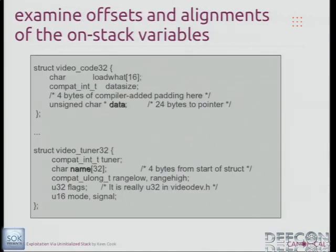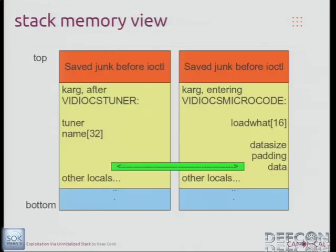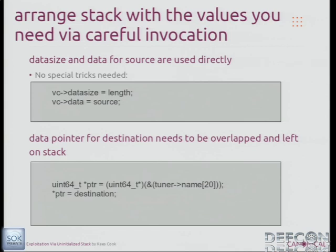You have to look at the two different structures in the union. Our target is video_codec32 — we want to control data. We have to figure out where it is relative to the other structure in the union. It was relatively straightforward because in video_tuner there was a large name string. Looking at it graphically: there's everything before the ioctl on the stack, and after returning from the tuner ioctl, what's left is whatever we put into that structure. Then we call the microcode function and whatever was there ends up in the data field. The only thing we need to do is calculate the offset — that's the C code for calculating where we are inside the other structure.